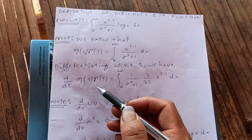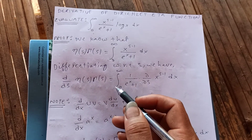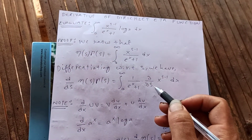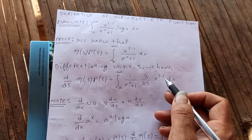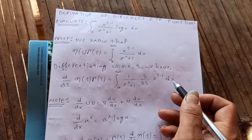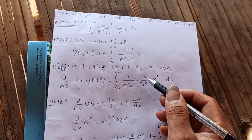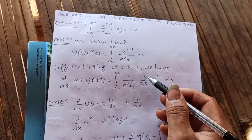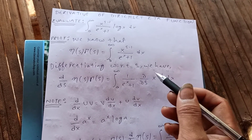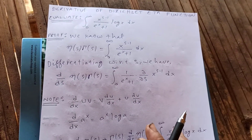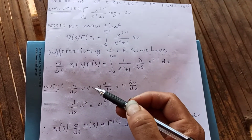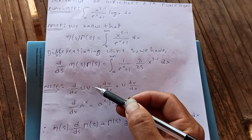Differentiating with respect to s, we have d/ds of η(s)·Γ(s) equals the integral from zero to infinity of 1 upon e to the x plus 1, times the partial derivative of x to the s minus 1 with respect to s, dx. We use the partial derivative here according to Leibniz's rule.